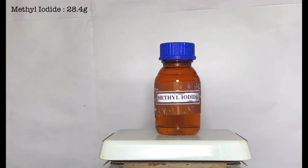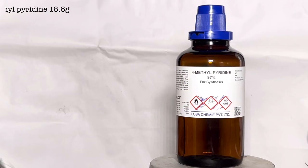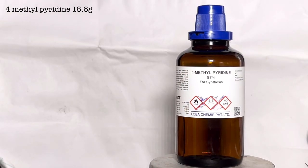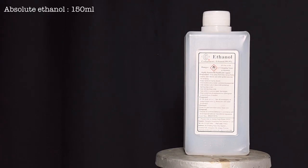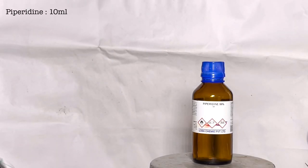For this experiment we will need 28.4 grams of iodomethane which was made in one of my previous videos, 18.6 grams of 4-methylpyridine, 150 milliliters of absolute ethanol, and 10 milliliters of piperidine.